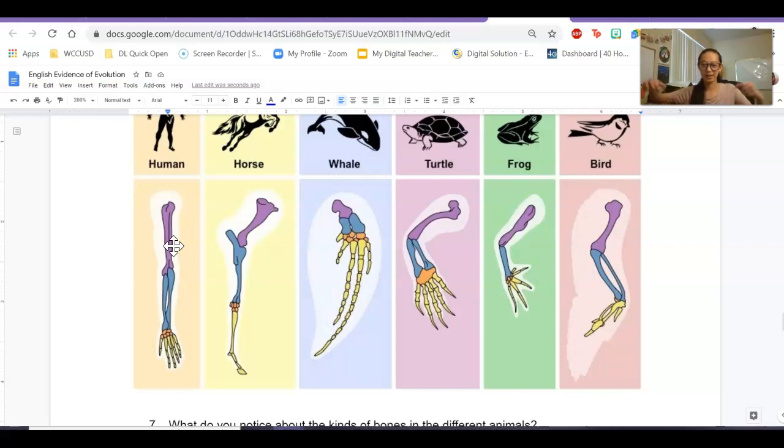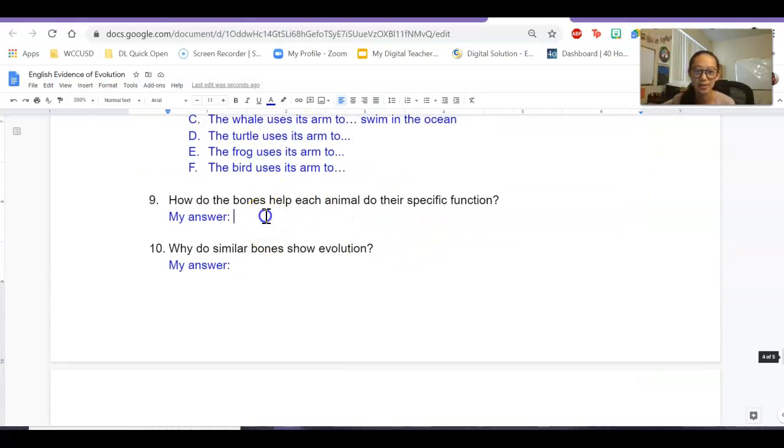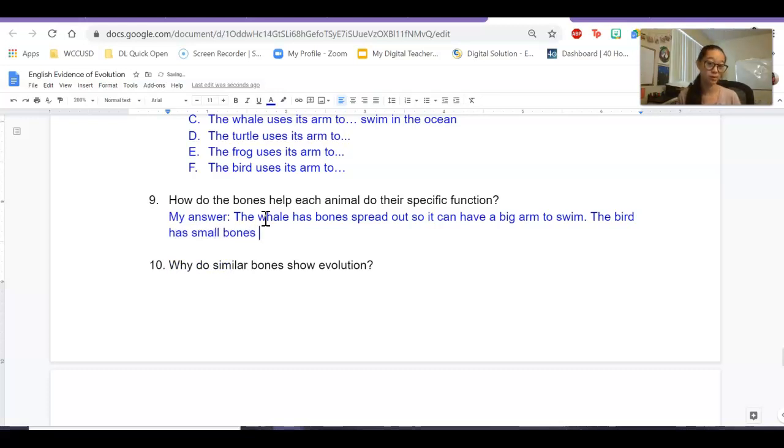And the whale, they have really big arms so they can swim. You can see maybe the bird. The bird has really small bones so it can fly. So that's what you're going to write on here. So maybe we'll say something like, the whale has bones spread out so it can have a big arm to swim. What else? The bird has small bones because I'm going to keep answering.